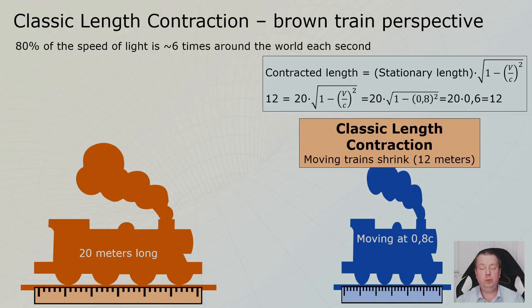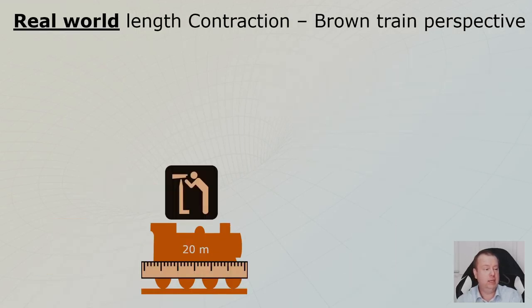So what if we would film the train and have all kinds of signal posts next to the track, so we can actually see on the picture where the front and the back of the train is, so we know how long it is. It should be 12, right? No, it will not be. Let's look at the real train length contraction.